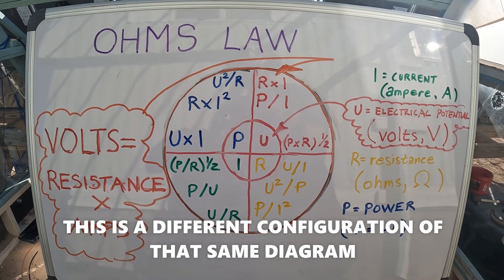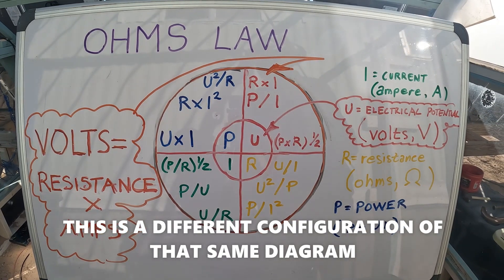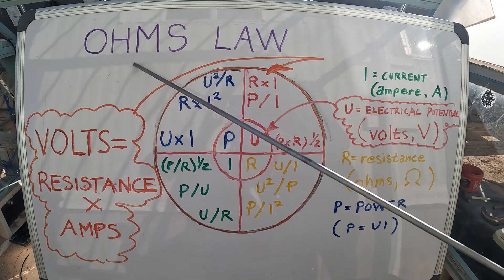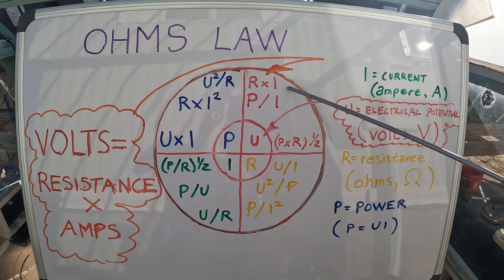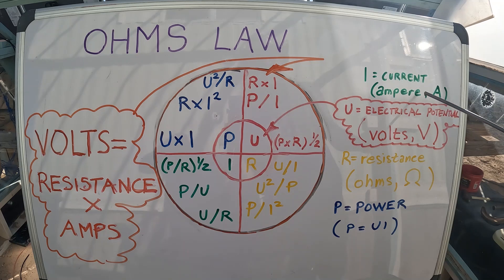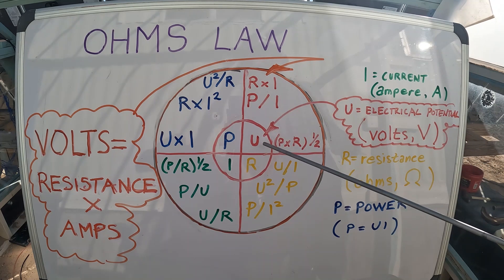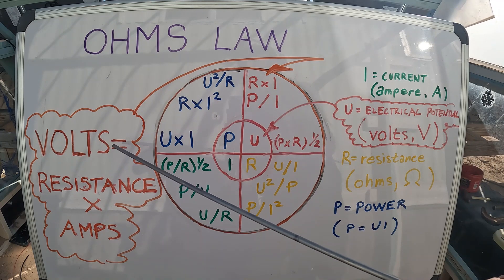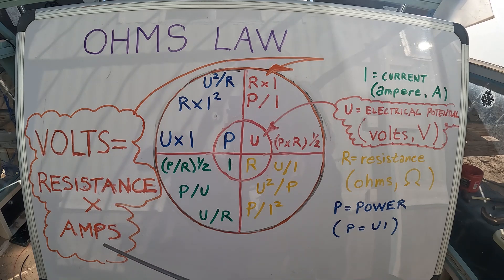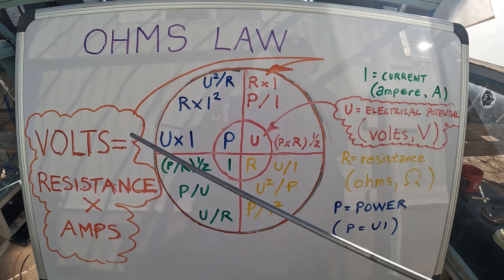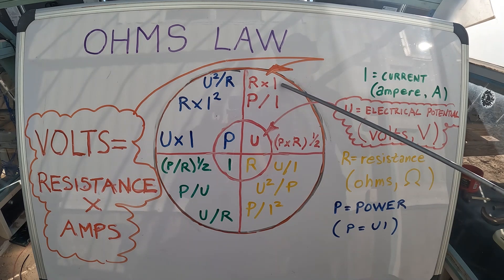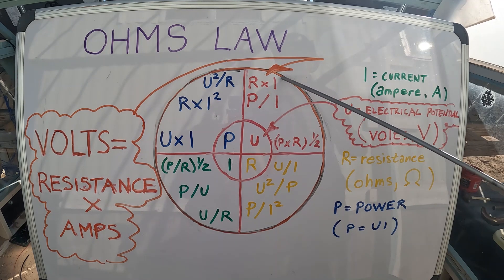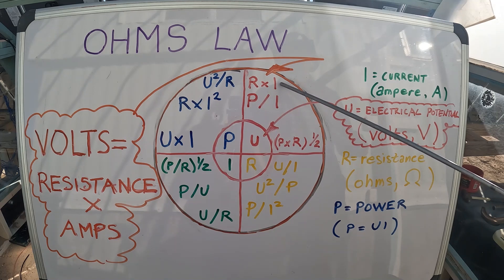This should have been episode one, part one — Ohm's Law: resistance times current (amperage). Resistance times amperage equals voltage. Volts equals resistance times amps. That's the formula that will determine the length or the power that we can put to these elements.